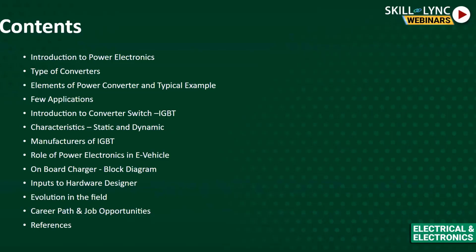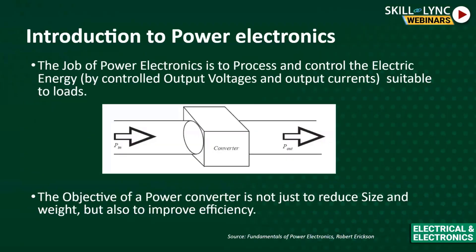Starting with the introduction to power electronics: the main task of power electronics is to convert one form of electrical energy to another form - basically the output is a controlled voltage, a controlled current, or both can be controlled at a time as desired by the load. Here is a typical simple block diagram of a power electronic converter, showing just the power input and the power output without feedbacks or control.